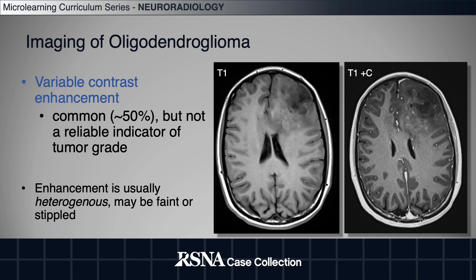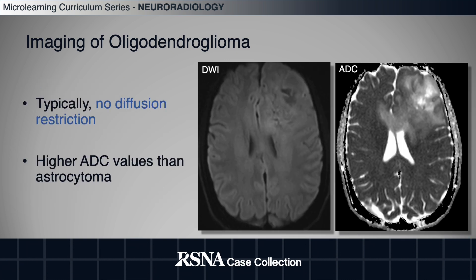Oligos demonstrate variable contrast enhancement, seen in about 50% of cases. Although fairly common, enhancement is not a reliable indicator of tumor grade — it does not necessarily predict a higher grade. When seen, the enhancement is usually heterogeneous and can be somewhat faint or stippled, as in this case.